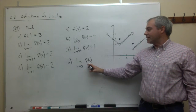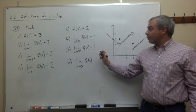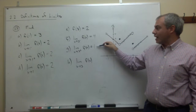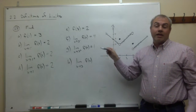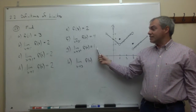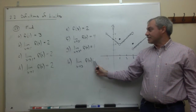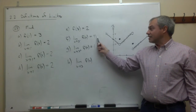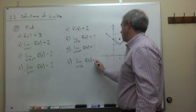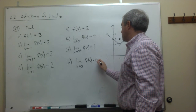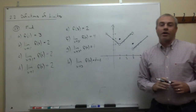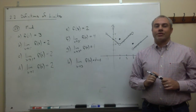Finally, what's the limit as x goes to 3 of f(x)? Again, this asks: do the left-hand limit and right-hand limit agree? If they agree, that's the answer; if they disagree, the limit does not exist. In this case they disagree — the left-hand limit is 4 and the right-hand limit is 1 — so we say this limit does not exist. I'll leave the last four parts of this question for you.